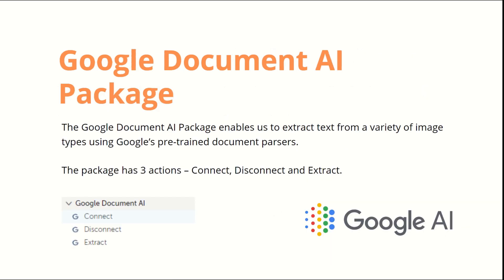Then we have the Google Document AI package, which is really exciting and a must-try package. We'll have a separate video covering it. For now, understand that this package enables us to extract text from a variety of images using Google's pretrained document parsers. Currently this package has three actions: Connect, Disconnect, and Extract. We'll prepare a use case and cover this in detail.